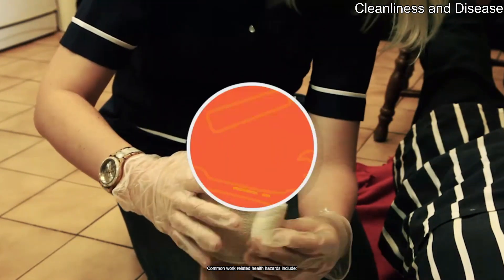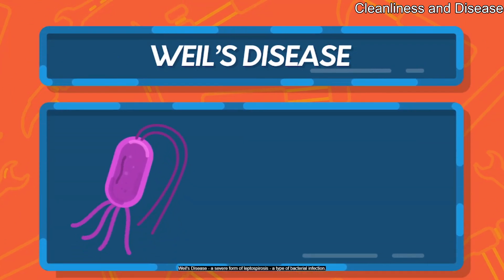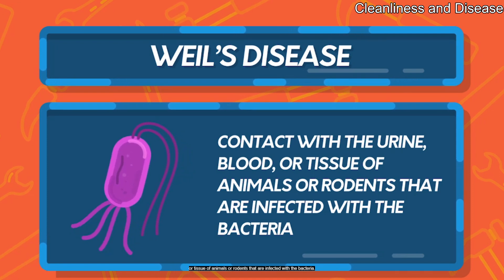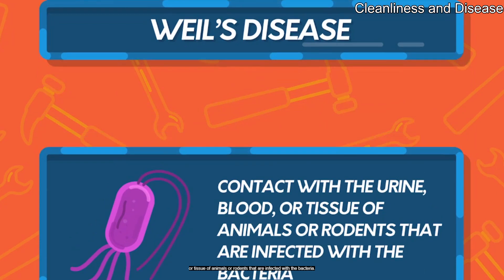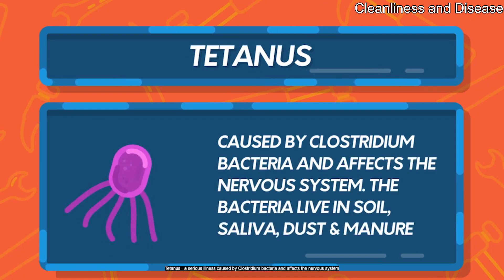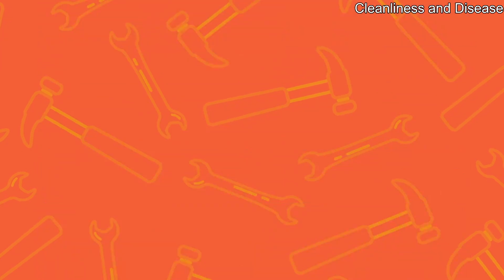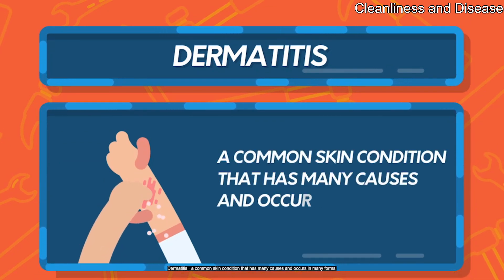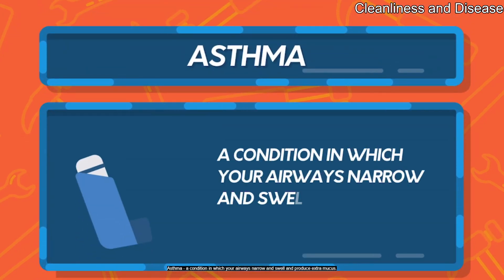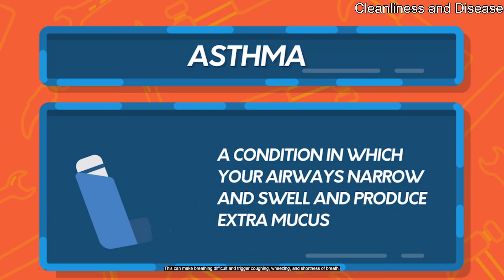Common work-related health hazards include: Weil's disease, a severe form of leptospirosis, a type of bacterial infection — you can contract it if you come into contact with the urine, blood, or tissue of animals or rodents infected with the bacteria. Tetanus, a serious illness caused by Clostridium bacteria that affects the nervous system; the bacteria live in soil, saliva, dust, and manure. Dermatitis, a common skin condition with many causes and forms. Asthma, a condition in which your airways narrow and swell and produce extra mucus, making breathing difficult and triggering coughing, wheezing, and shortness of breath.